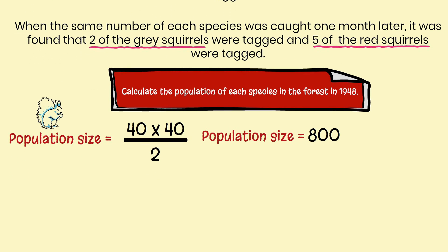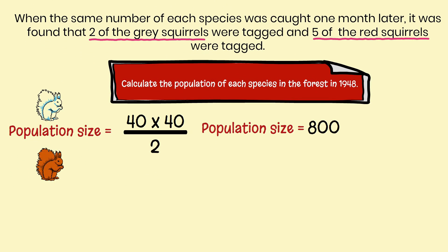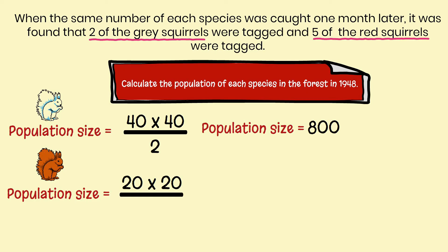Let's calculate the population of red squirrels. 20 were caught on the first time, multiplied by 20 caught on the second time, then divided by those five red squirrels that had the tag in them caught on the second time. So population size is 20 × 20 ÷ 5, which means that the population of red squirrels in 1948 was only 80.